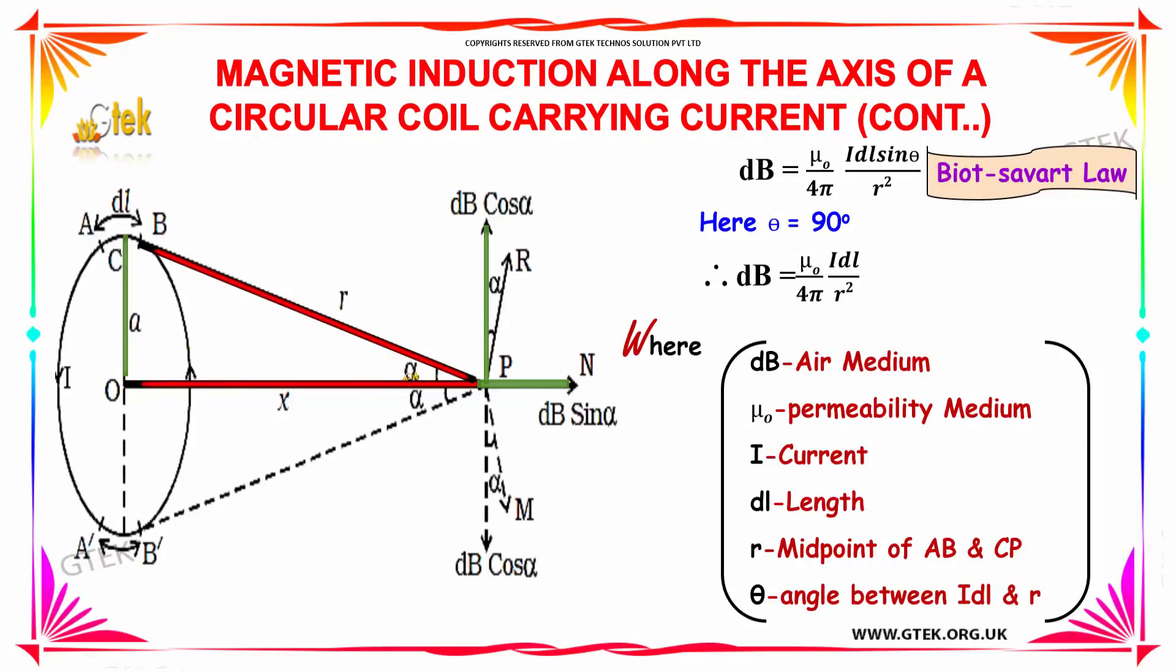Considering if the angle theta is equal to 90 degrees, it will become sin theta is equal to 1, so dB equal to mu0 by 4 pi into i into dl by R square.